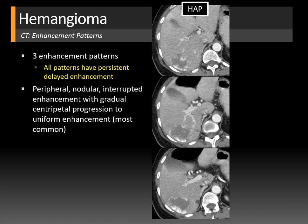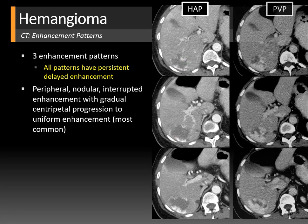The most common pattern is peripheral nodular interrupted enhancement with gradual centripetal progression to uniform enhancement. On a hepatic arterial phase image, the portal veins and hepatic artery enhance but the hepatic veins do not yet. There is irregular interrupted peripheral nodular enhancement. On a later portal venous phase image, the hemangioma starts to progressively enhance and coalesce, moving towards the center — very specific for hemangioma.